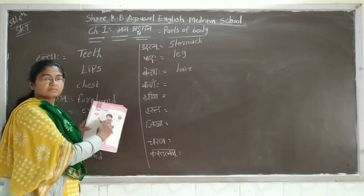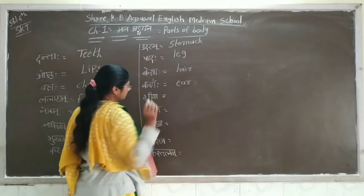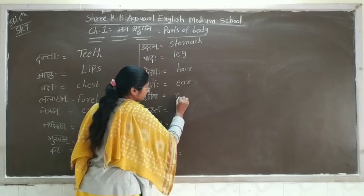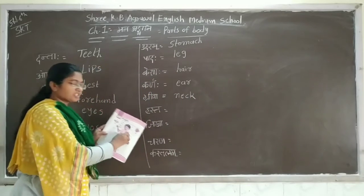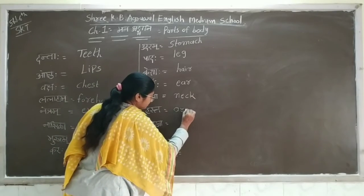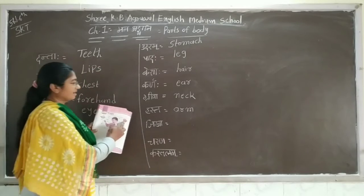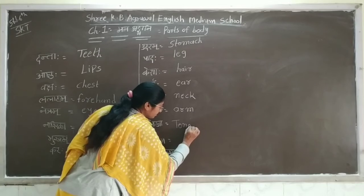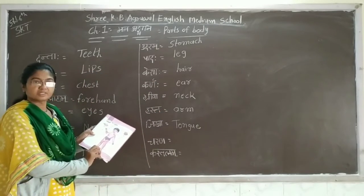Cundro means ear. Then Griva means neck. Hustav means arm. Then Jimba, that means tongue. Then Chard, that means foot.